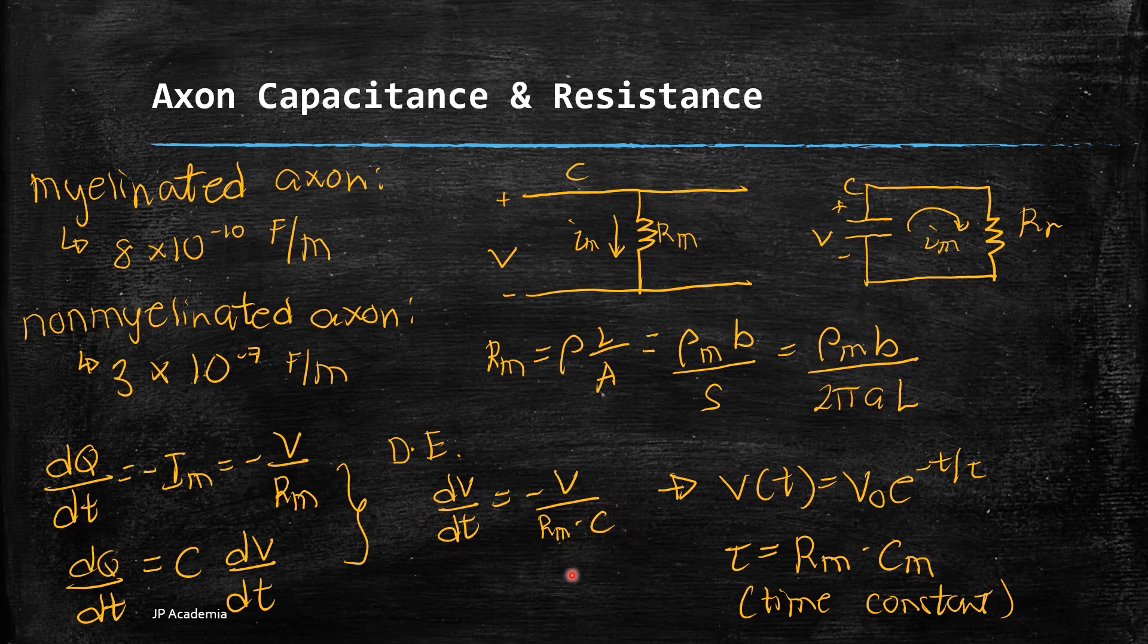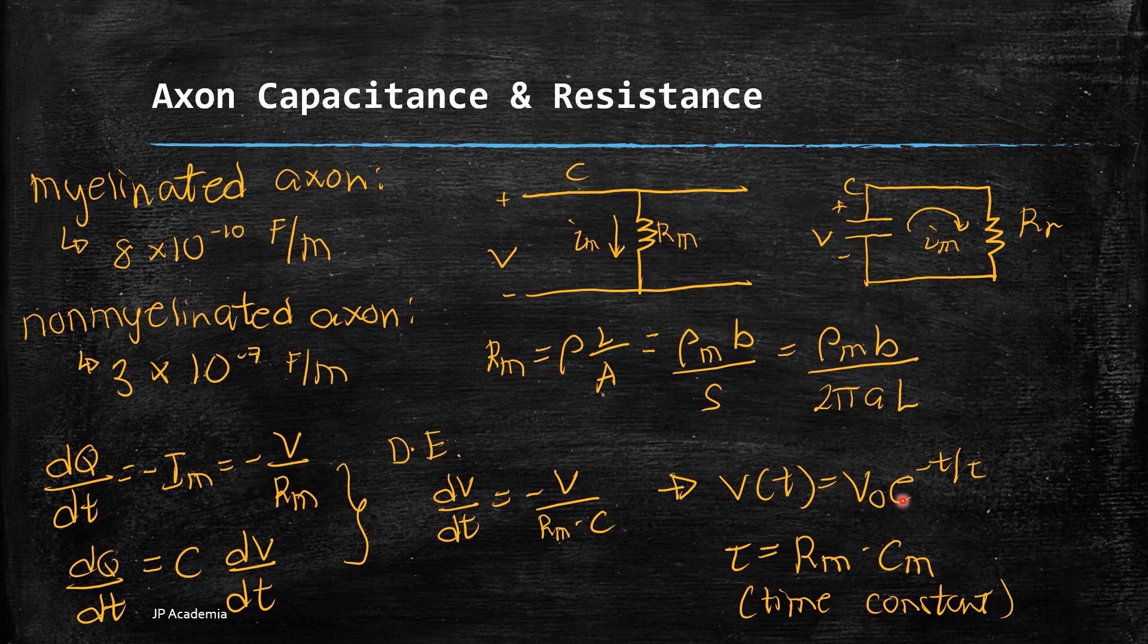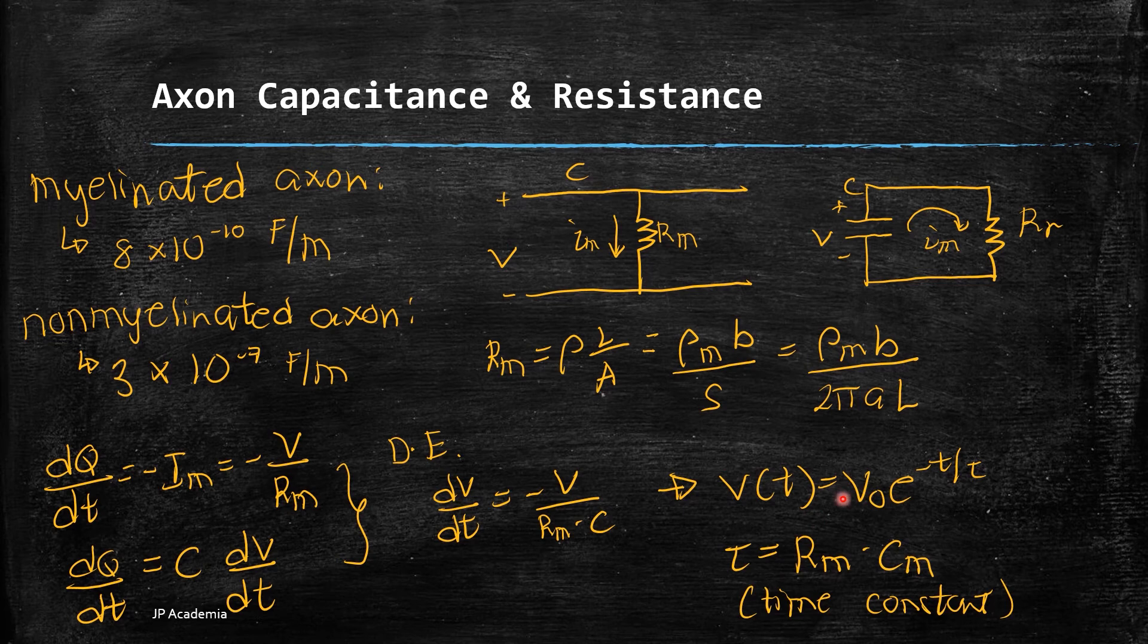Solving this differential equation, you will get this solution: V(t) = V₀e^(-t/τ), where τ is the time constant for this RC circuit. Therefore, τ = R × C, or the resistance value of the membrane times the capacitance value.